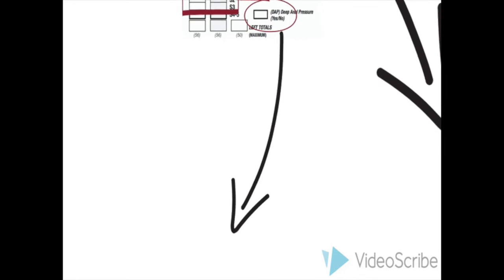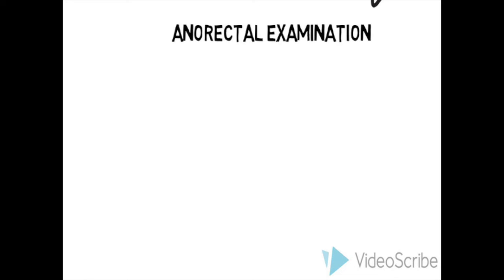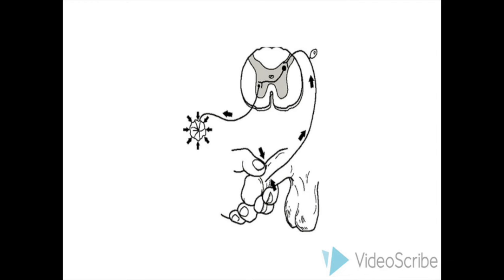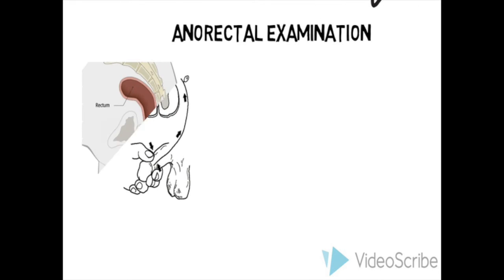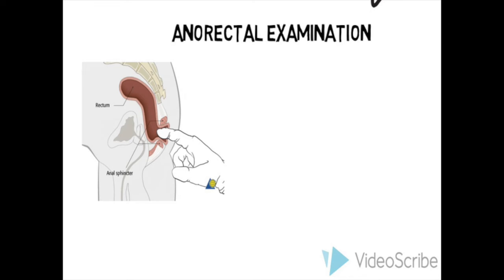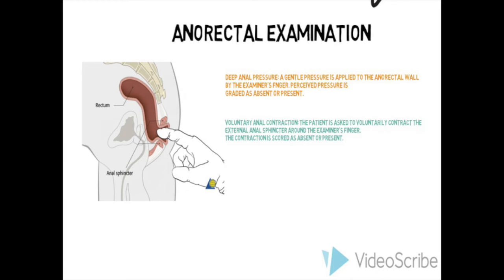The anorectal examination is vital in determining the ASIA Impairment Scale and the level of the lesion. When performing the rectal examination, it is important to determine whether the bulbocavernosus reflex is intact. If the bulbocavernosus reflex is negative, this indicates that the patient is still in spinal shock and the level of injury cannot be assessed. Once it is positive, the patient is out of spinal shock and the ASIA assessment can be performed. On digital rectal examination, voluntary anal contraction and deep anal sensation are tested for.